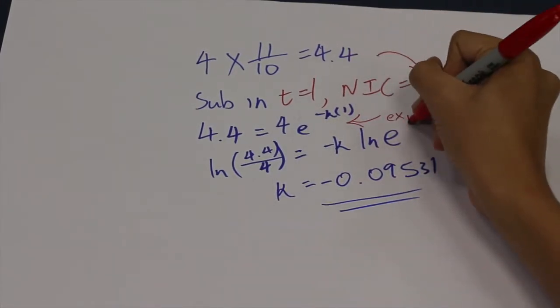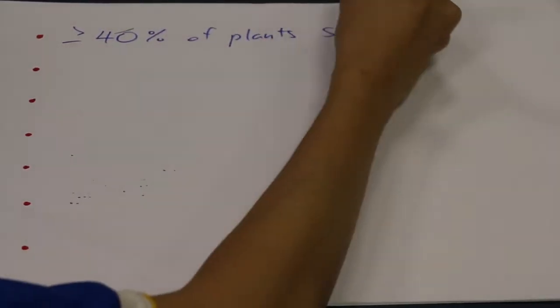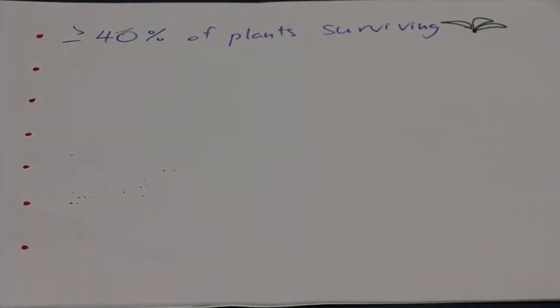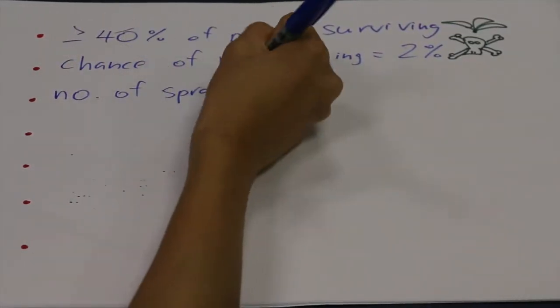We want at least 40% of the plants to survive. Assuming that the chance of the plants dying is 2%, we can only spray a maximum of 45 times, derived by log base 98% of 40%.